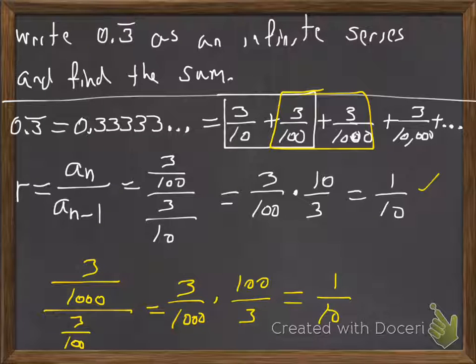And again, we get 1 over 10. And so any two subsequent terms, sequential terms, take that ratio. The second one divided by the first, it's going to be 1 over 10. That's our common ratio, okay?